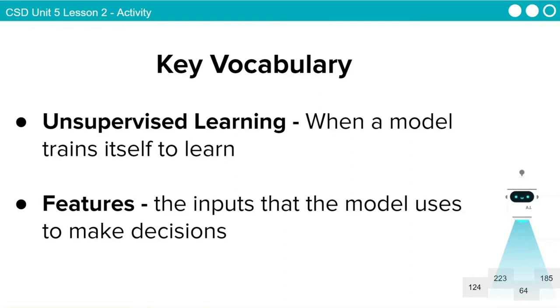Here's some more key vocabulary words for this unit. Unsupervised learning, when a model trains itself to learn. And features, the inputs that the model uses to make decisions.